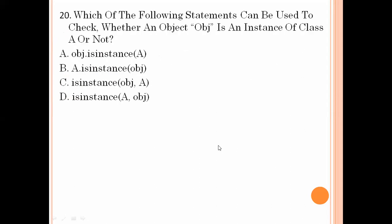Which of the following statements can be used to check whether an object OFJ is an instance of class A or not? object.isinstance() is not correct. a.isinstance(object) is also not correct. isinstance(object, a) — this is the right answer, meaning check if object is an instance of a.